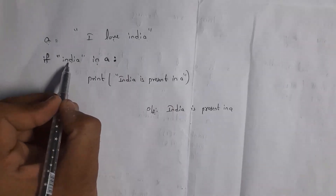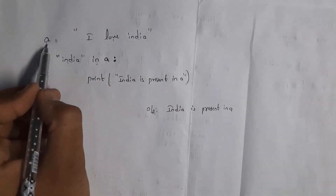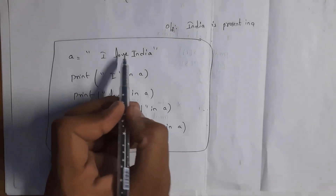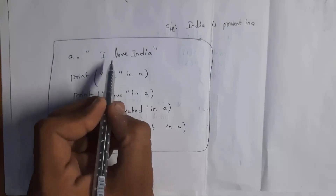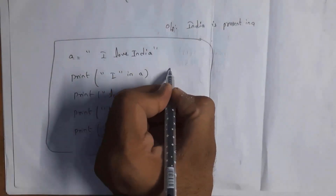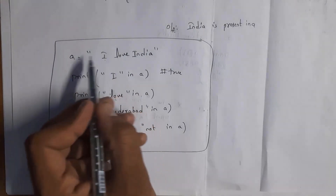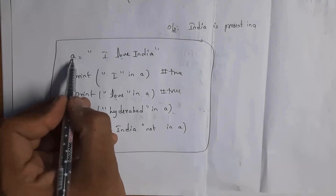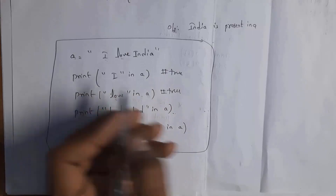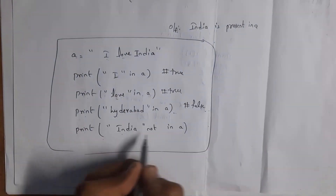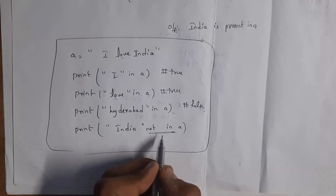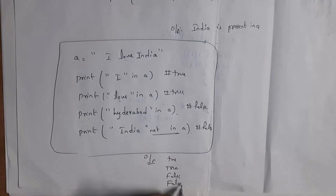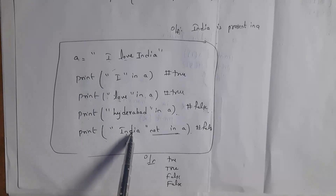For example, in place of India if I give Hyderabad — if Hyderabad in a — it will check whether Hyderabad is present in variable a. Since Hyderabad is not present, it will not print the statement and I will get no output. You can also use print with the in keyword directly: print('i' in a) gives True, print('love' in a) gives True, and print('Hyderabad' in a) gives False. Using the 'not in' keyword: print('India' not in a) gives False since India is present.